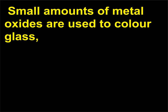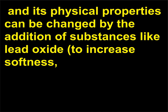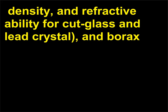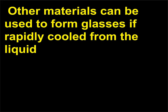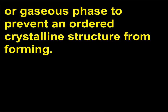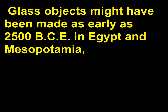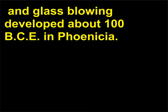Small amounts of metal oxides are used to color glass. Its physical properties can be changed by the addition of substances like lead oxide to increase softness, density, and refractive ability for cut glass and lead crystal; and borax to significantly lower thermal expansion for cookware and laboratory equipment. Other materials can be used to form glasses if rapidly cooled from the liquid or gaseous phase to prevent an ordered crystalline structure from forming. Glass objects might have been made as early as 2500 BCE in Egypt and Mesopotamia, and glass blowing developed about 100 BCE in Phoenicia.